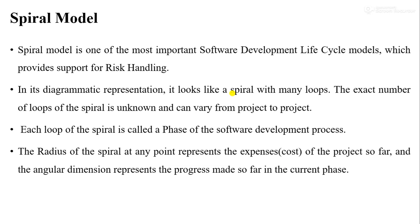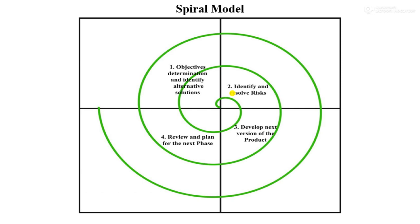In summary, the spiral model is one of the most important software development lifecycle models, providing support for risk handling. In its diagrammatic representation, it looks like a spiral with many loops. The exact number of loops is unknown and can vary from project to project. Each loop is called a phase of the software development process. The radius of the spiral represents the cost or expenses of the project so far, and the angular dimension represents the progress made in the current phase.